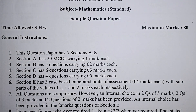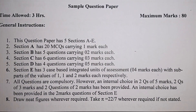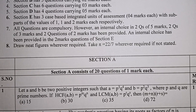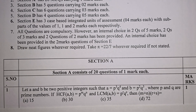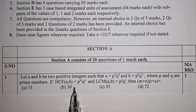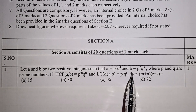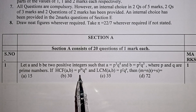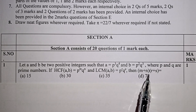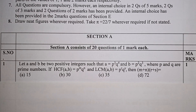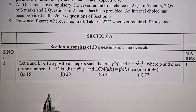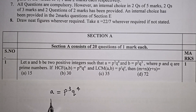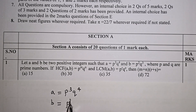This is Section A, which consists of 20 questions of one mark each. This is the first question: Let A and B be two positive integers such that A is equal to P³Q⁴ and B is equal to P²Q³, where P and Q are prime numbers. The question is very easy.